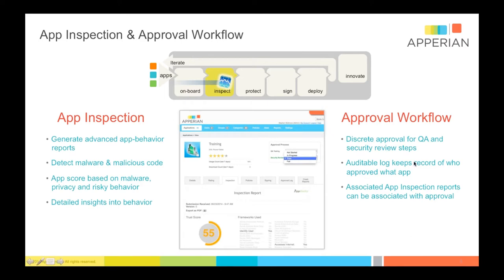We also have an application workflow, which means you can have groups within the organization responsible for signing off on the app for QA or for security review. All of these steps are auditable and recorded. This is an option — you don't need to do this. If you're a developer who just wants to publish and go, you can do that. But if you choose to, you can use the workflow to create multiple steps before an application is deployed to all your people.